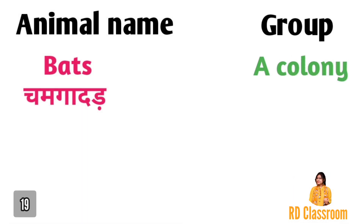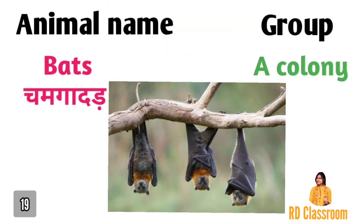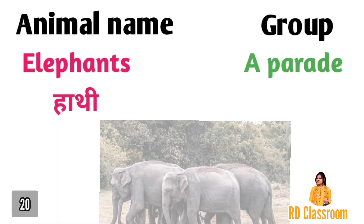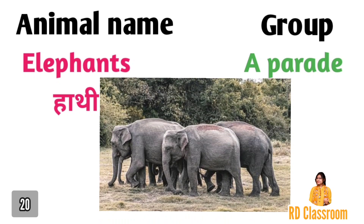Number nineteen is bats, ya fir chumgadar, jiske group ko kaha jata hai a colony. Number twenty is elephant, ya fir hathi, jiske group ko kaha jata hai a parade.